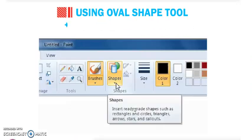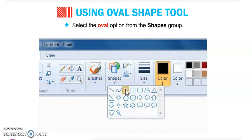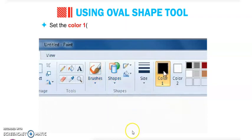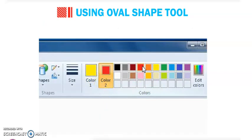First, we are using the oval shape tool. You can see this is your ribbon. In the ribbon, we have different types of tools. First, you have to select the shape group and you can see different shapes are here. Select the oval tool from the shape group. Then select color one as yellow and color two as red. Color one is the foreground color and color two is the background color.